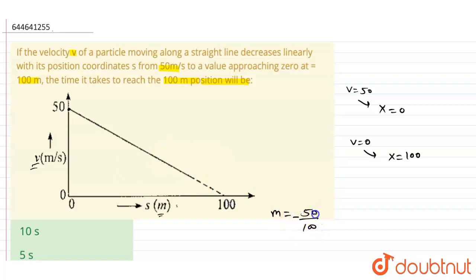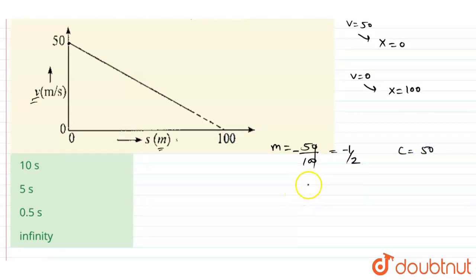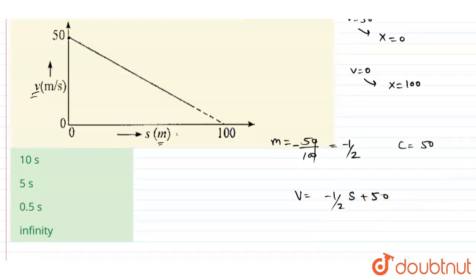So it will be negative 1/2. So slope will be minus 1/2 and intercept will be c, which is 50 here. So we can write by equation of line y equals mx plus c. Here the y is basically v, so v equals m is minus 1/2, x is basically s, plus c is 50.